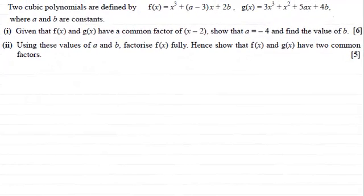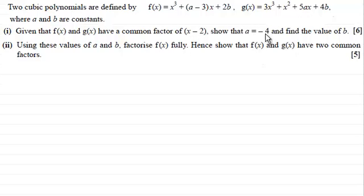In the first part of this question, we were given that f(x) and g(x), these two polynomials, had a common factor of x minus 2. We had to show that a equalled minus 4, and go on to find the value of b. We found out that b equalled 3.